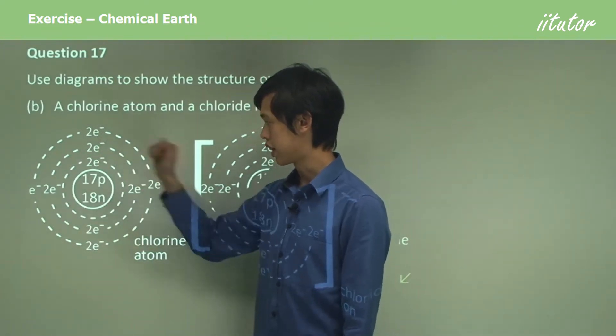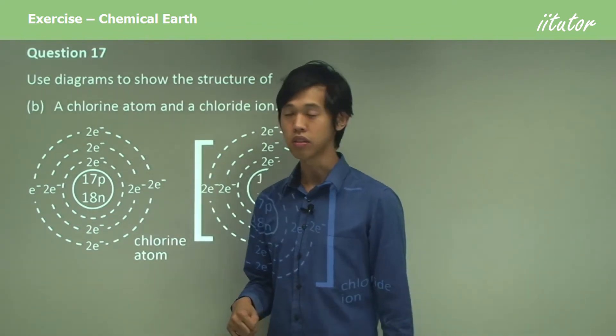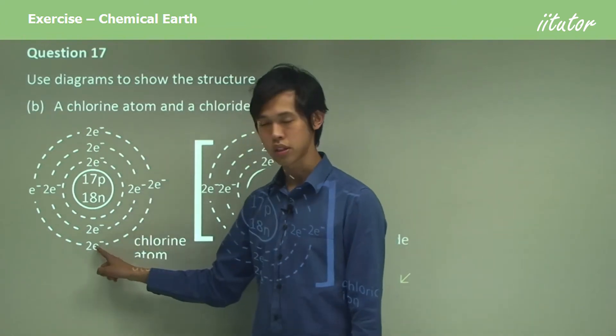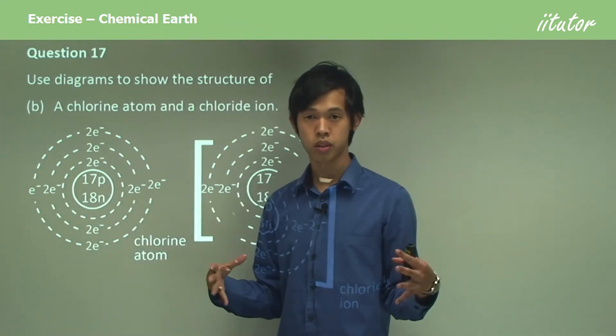There's eight electrons in the second shell. So again, if you want to pause it now, you can quickly count them for yourself. And then there's two, two, two, which is six, seven electrons in the outermost shell.